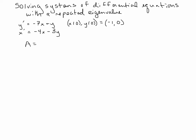So here's a differential equation. The matrix associated with this differential equation is negative 7, 1, negative 4, negative 3. And if you solved this for its eigenvalue and eigenvector, it only has one eigenvalue, which is repeated twice, negative 5. And it has an eigenvector associated with that of 1, 2.